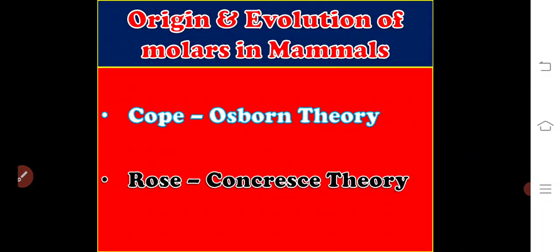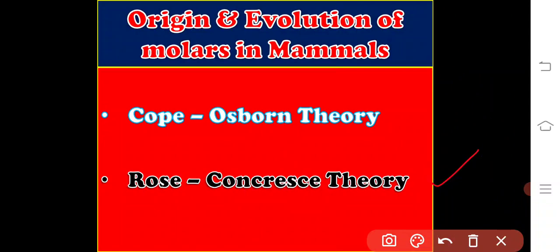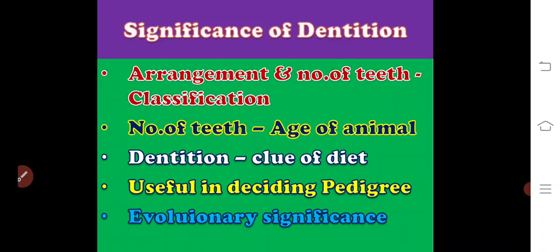Regarding the origin and evolution of molars in mammals, there are two theories. According to the Cope-Osborne theory, a simple reptilian cone elongated at its anterior and posterior ends and two extra cones arose to form the triconodont tooth, which then gave rise to hexaconodont and polyconodont teeth by addition of cones. According to the Romer-Concresce theory, two or more cones developed separately and independently and later united to form triconodont or hexaconodont types.